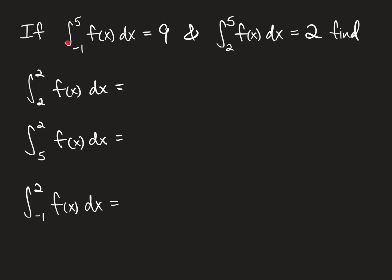If the integral from negative one to five of f of x dx equals nine, and the integral from two to five of f of x dx equals two, find what these are equal to. Well, the first example here, the integral from two to two of f of x dx is zero. Don't put too much thought into that one. If the limits of integration are the same, the answer is zero.